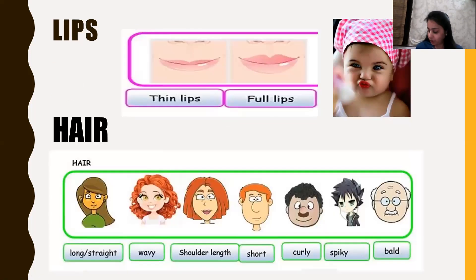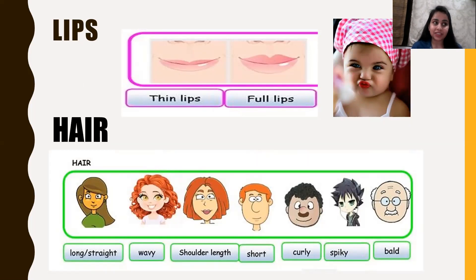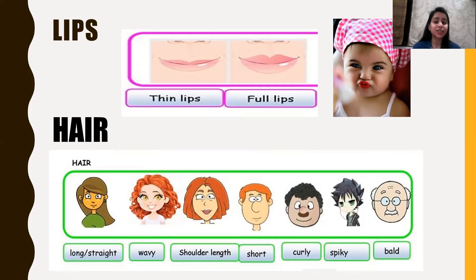Let's move to lips and hair. Lips can be thin lips, full lips (meaning thick lips), or pouting lips — these days we all pout when clicking a selfie, so those are pouting lips. Hair can be long and straight, wavy, shoulder length, short, curly, spiky, or bald. Someone who has very little hair or no hair is called a bald person.